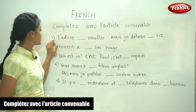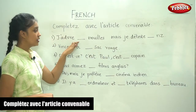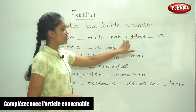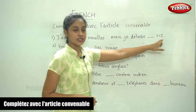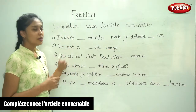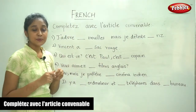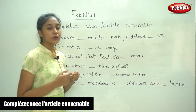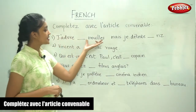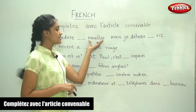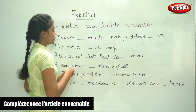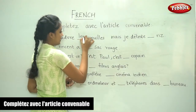The first sentence: 'Je dors dash nuit mais je déteste dash riz.' So now here, when we are being very specific, we will use the definite article. And since our noun here is in the plural form, it would be 'les'.